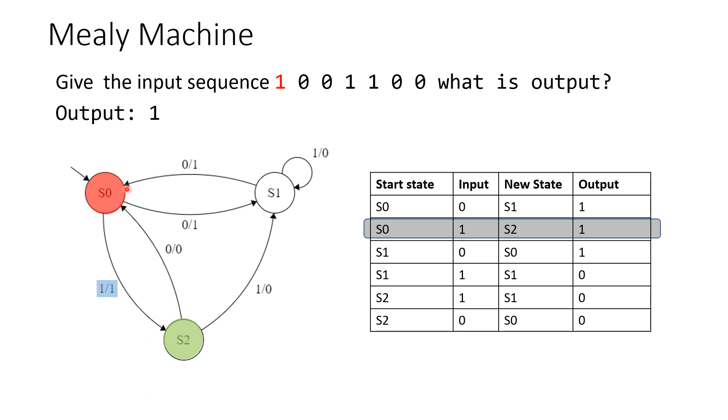From state 0 here, because our input is 1, we follow this transition here to state 2 and our output is 1. Now our input is 0, so therefore we follow this transition here back to state 0.